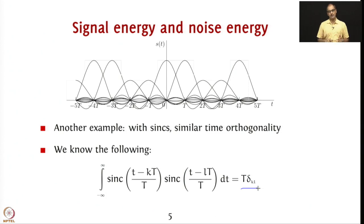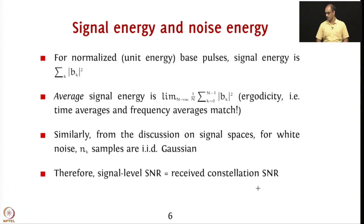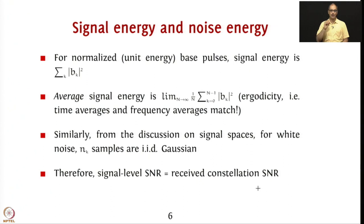Going forward, we assume the energy contained in our modulated signal is just the summation of |B_k|². One question is what about passing to passband — it is not difficult to show that with the correct root-2 scaling factors, the passband signal has the same energy, so there is no real issue. With a normalized unit-energy base pulse, the signal energy is just the summation of |B_k|², meaning you take every realized constellation point B₀, B₁, B₂, take the mod-square and add them up to get the signal energy.